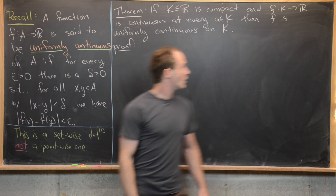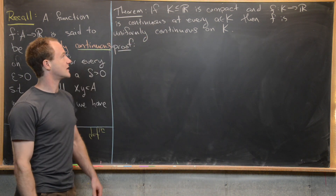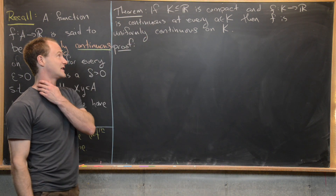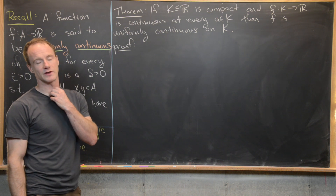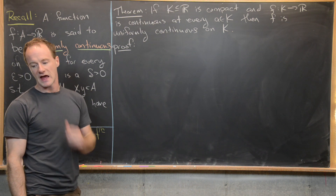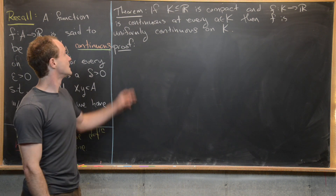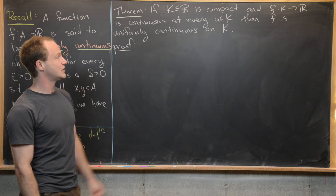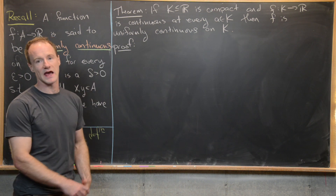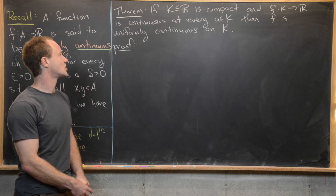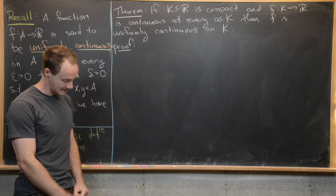So we're going to prove the following classic theorem: if K is a compact set of real numbers and f is a function from K to ℝ that is continuous at every point in K, then it turns out that f is uniformly continuous on K.